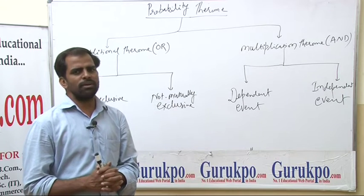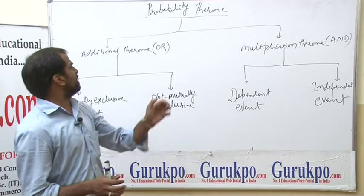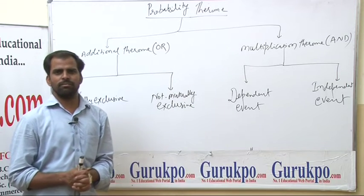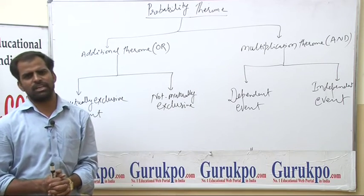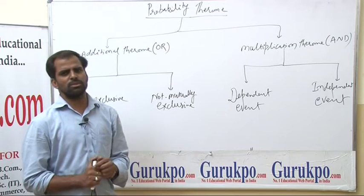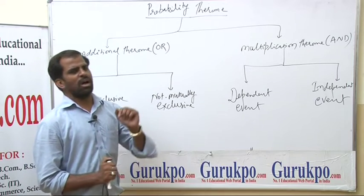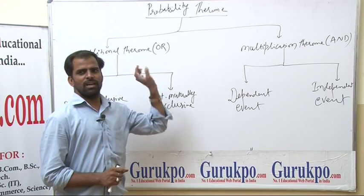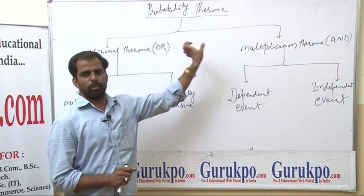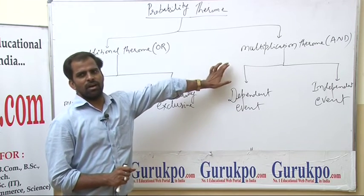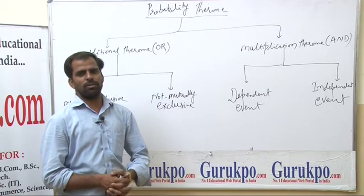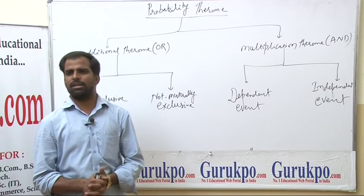Probability theorems are divided into two categories: addition theorem and multiplication theorem. Probability ke siddhantan ko aap dho bhaag mein baat sakte hain — yogatma theorem (pramay) aur gunatma pramay. That is, additional theorem and multiplication theorem.